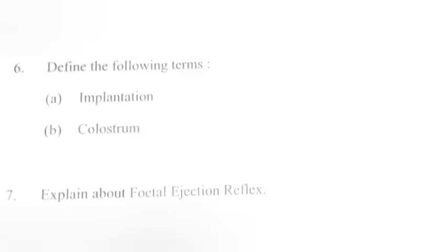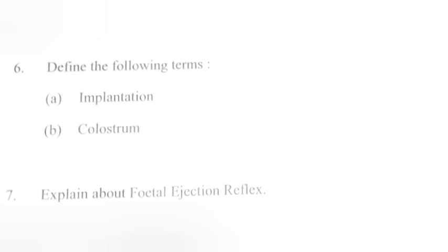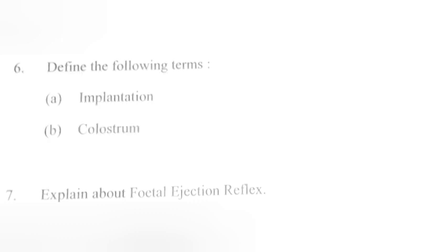Question 6. Define the following terms. A. Implantation. B. Colostrum. Answer A. Implantation: attachment of blastocysts to the uterine wall, or embedment of blastocysts in the endometrium of the uterus. Answer B. Colostrum: the milk produced during the initial few days of lactation is called colostrum.